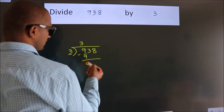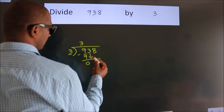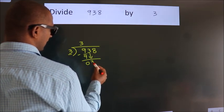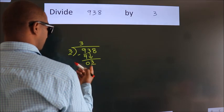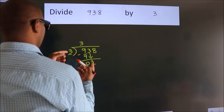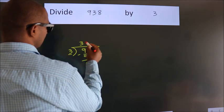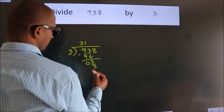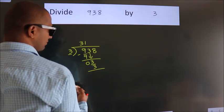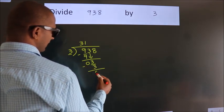After this, bring down the next number. So 3 down. So 3. When do we get 3? In 3 table. 3 ones 3. Now we subtract. We get 0.